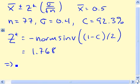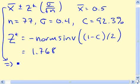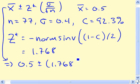Now we're all set. Our confidence interval just looks like 0.5 plus or minus 1.768 times σ, so 0.4 over the square root of n, square root of 77.